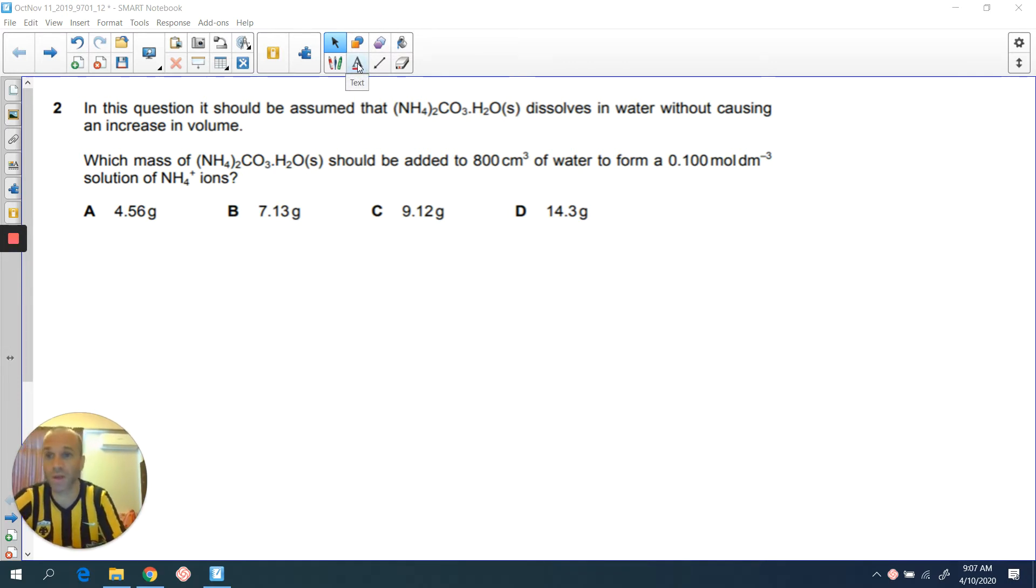To read out the question: Which mass of this compound should be added to 800 cubic centimeters of water to form a 0.1 mole per decimeter cubed solution of NH4+ ions? Those are ammonium ions. Then you've got your various options there.